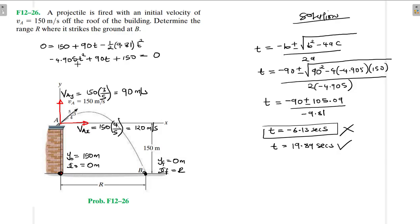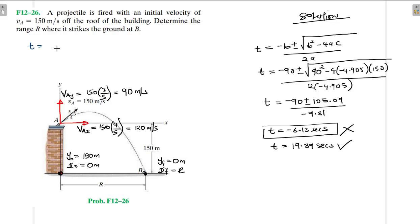So the time is t equals 19.89 seconds. This is the time it takes for the object to travel from A, follow the projectile path, and reach point B.